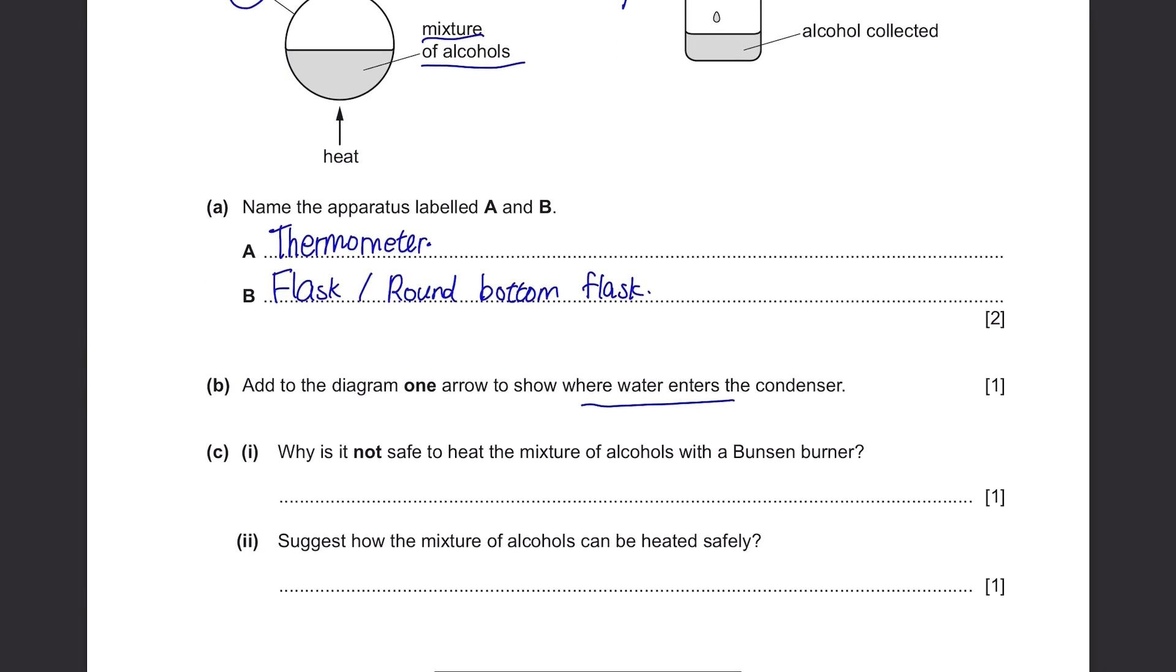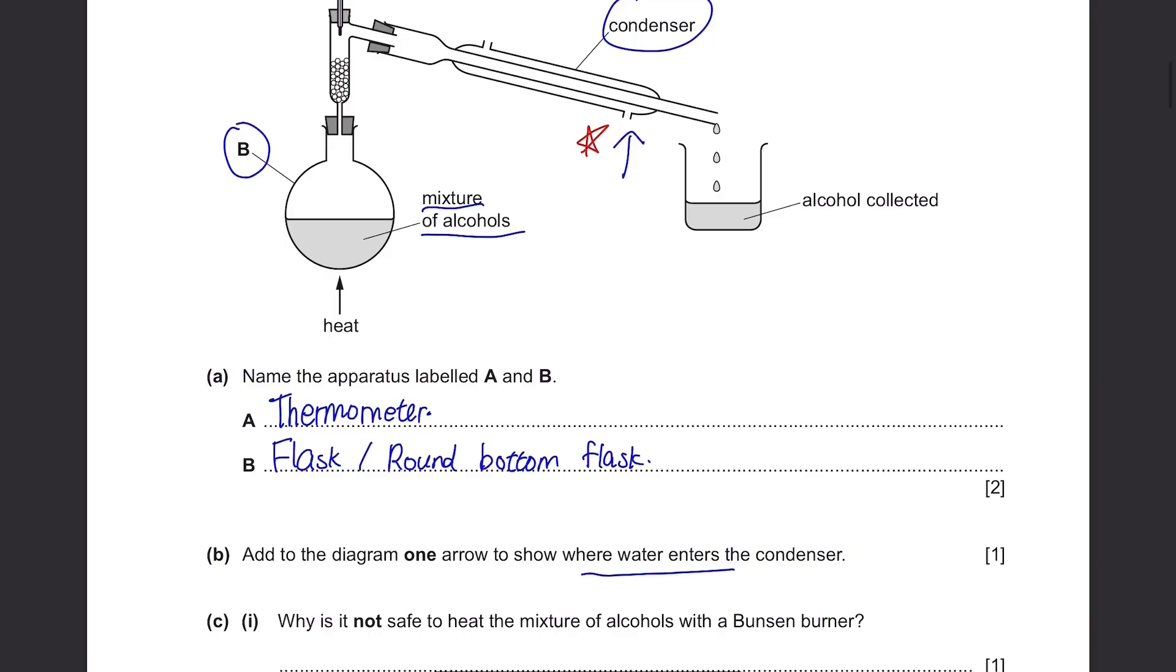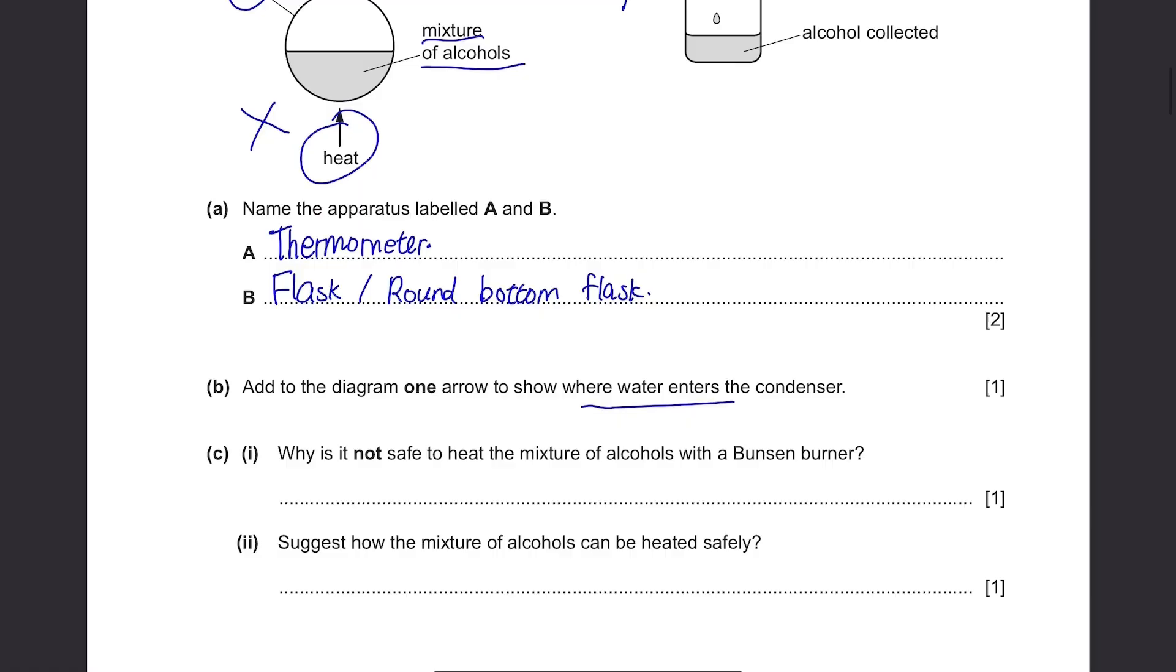Part C, why is it not safe to heat the mixture of alcohols with a Bunsen burner? Well in the diagram, it's shown that they're gonna directly heat the mixture of alcohols, but we don't do this in real life. It's extremely dangerous because alcohols are highly flammable and it can catch a fire. So it's not safe to do that because alcohols are flammable.